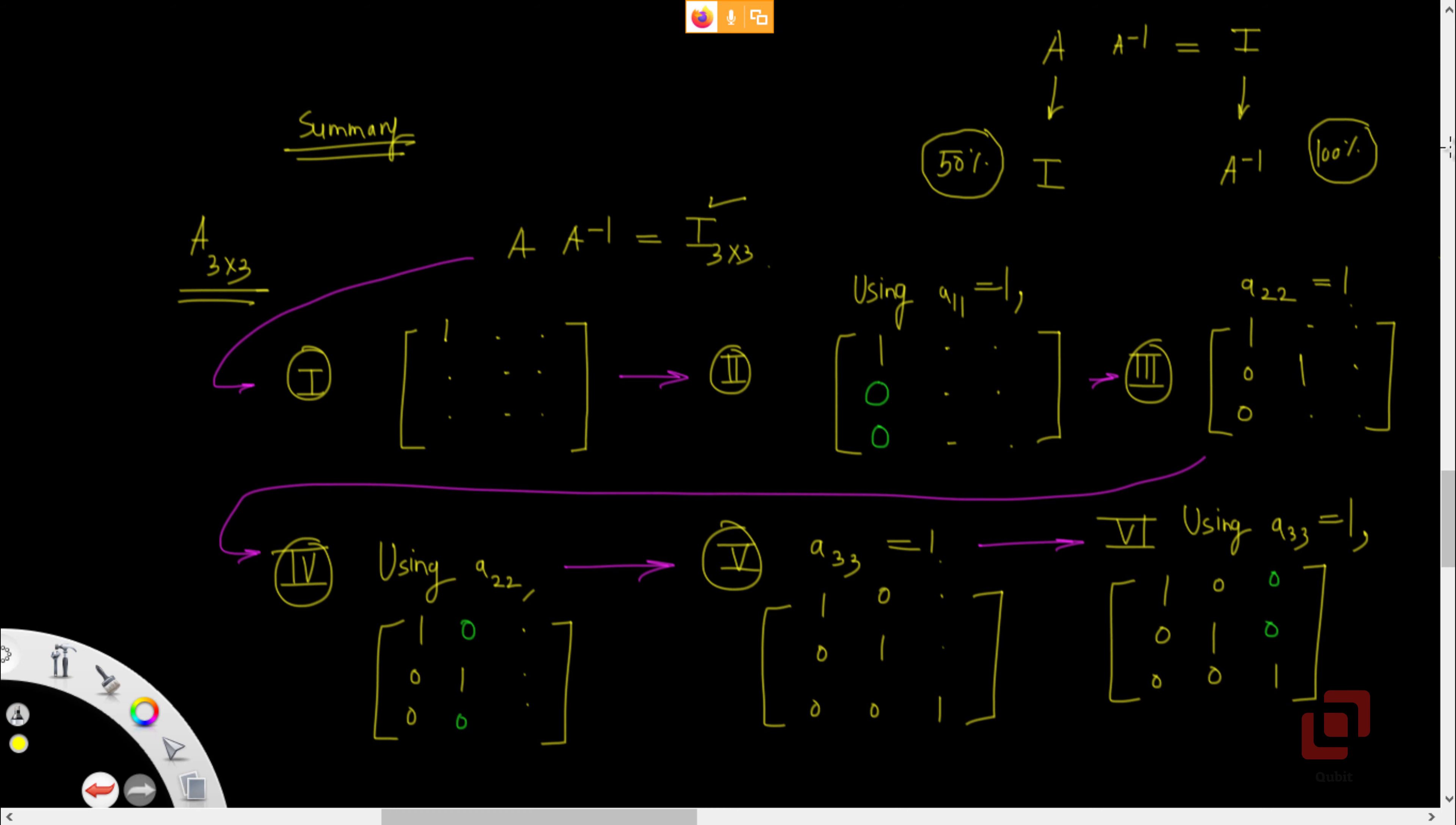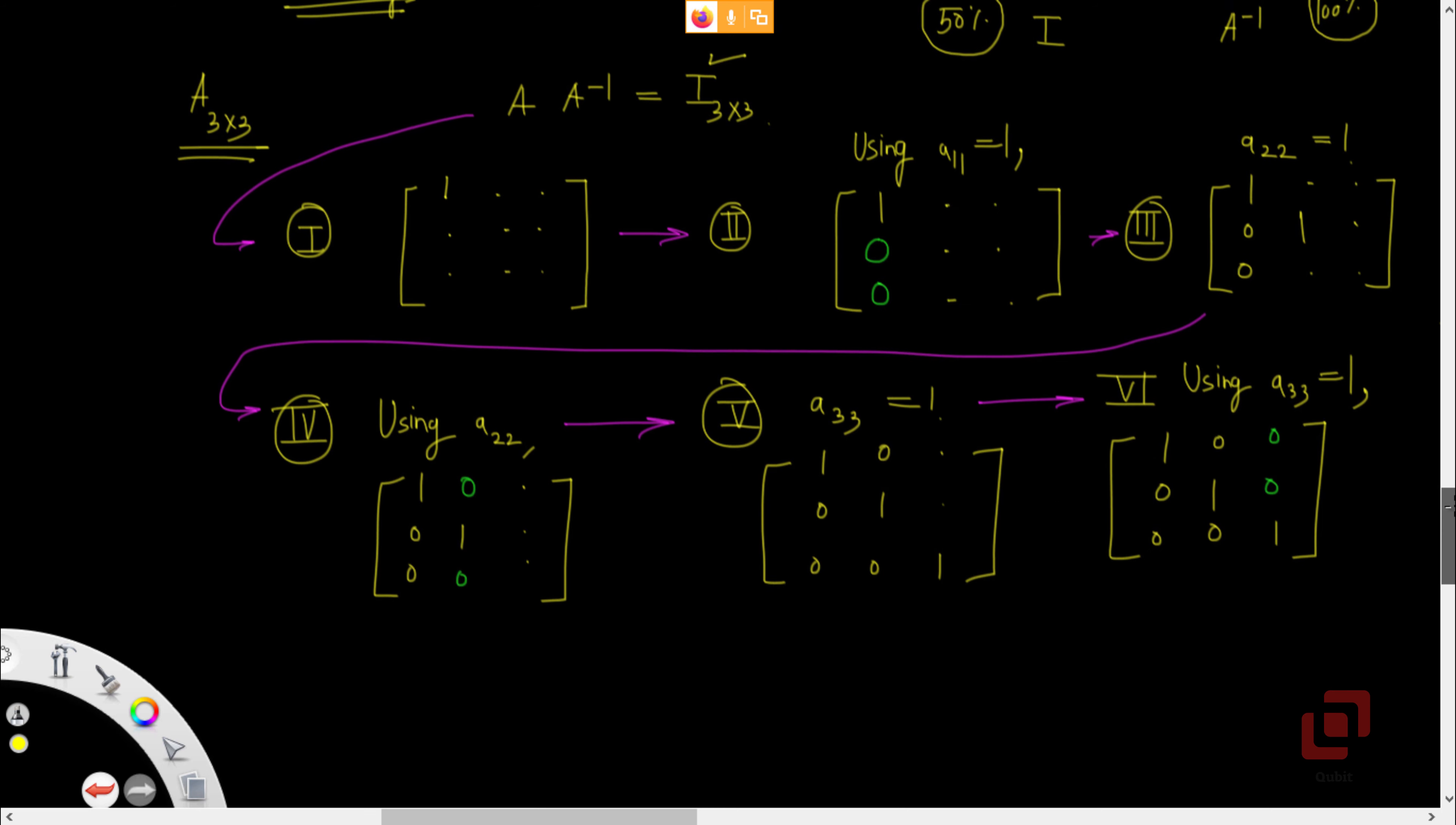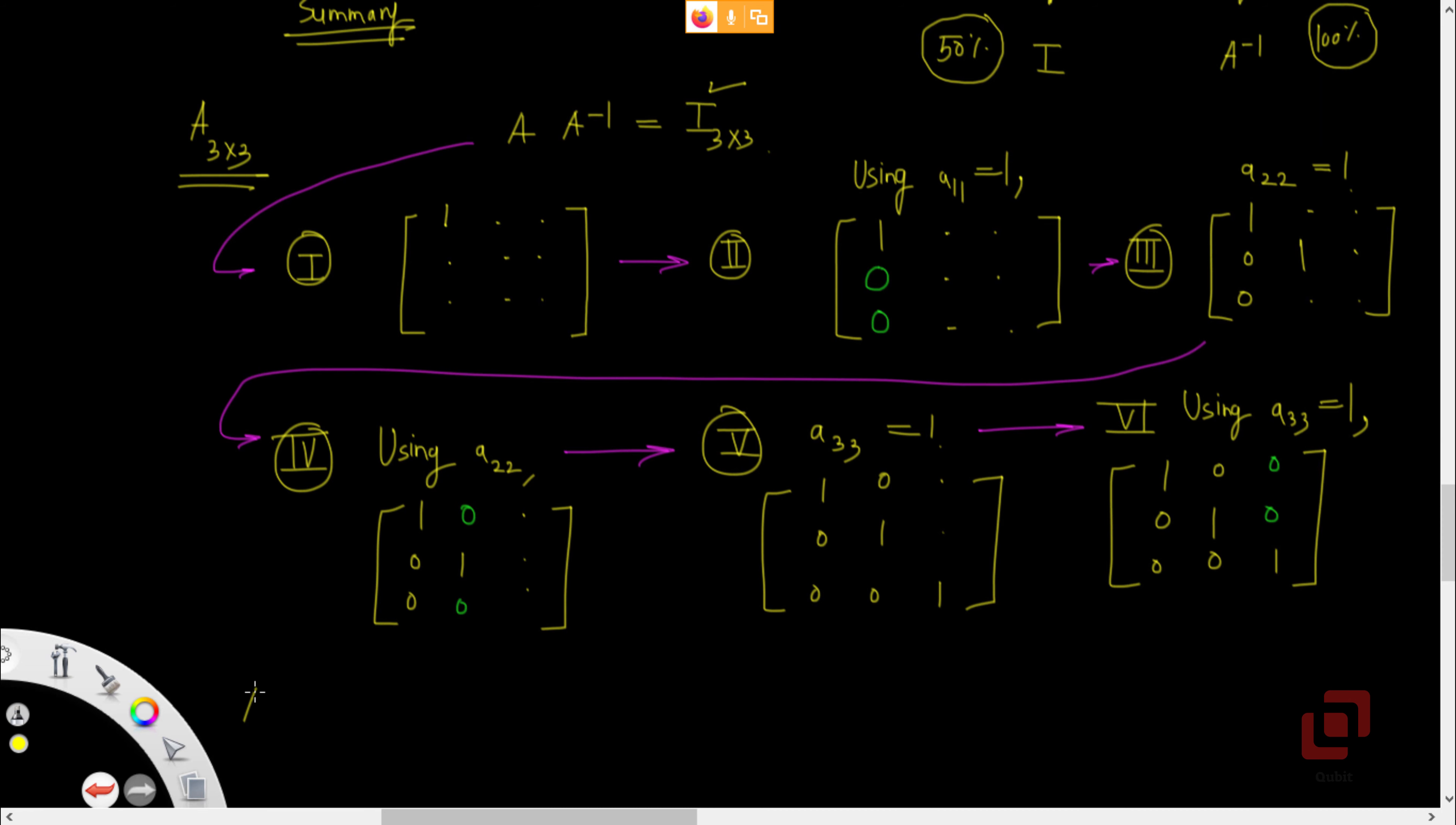Now, what will be the summary for 2 by 2? We first make sure that the first entry is 1. All other entries unchanged. First step.